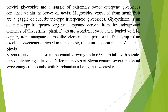Steviol glycosides are largely used in herbal preparations — these are extremely sweet diterpene glycosides obtained from the leaves of Stevia. Mogrosides, extracted from monk fruit, are cucurbitane-type terpenoid glycosides. Glycyrrhizin is an oleanane-type triterpenoid organic compound derived from the roots of the Glycyrrhiza plant. Dates are wonderful sweeteners loaded with potassium, copper, iron, manganese, and pyridoxine. Maple syrup is an excellent sweetener enriched in magnesium.